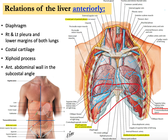So the structures anterior to the liver include: the lower part of both lungs, and the right and left pleura. On the right side there is the costal cartilage, and maybe the upper part from the left as well. You can also see the xiphoid process, which is anterior to the liver.